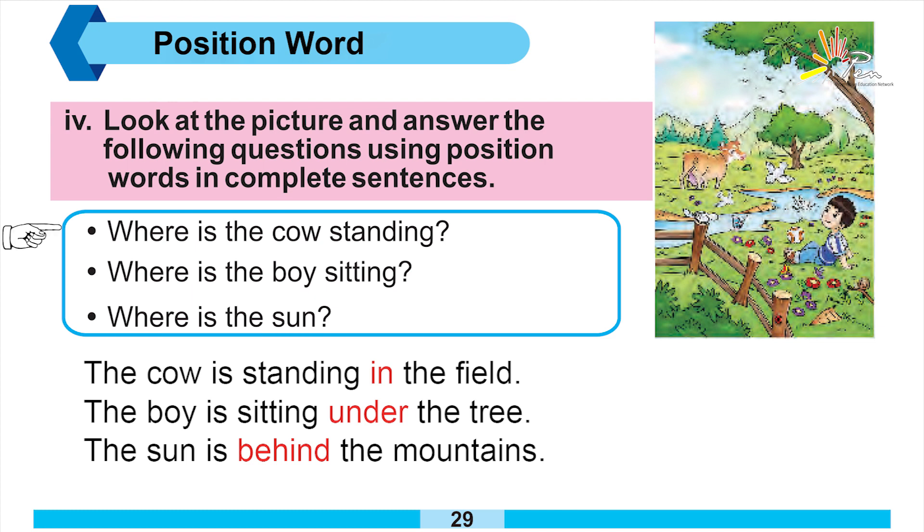So in these three sentences, we have used our position words: in, under, behind. Position words can also be beyond this. I have to tell you about one reference point. I have to tell you about the cow that it is on the field. If you tell the cow's position in a different way, then you can use other position words.